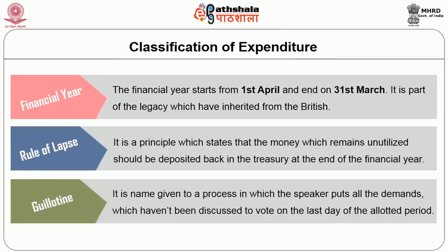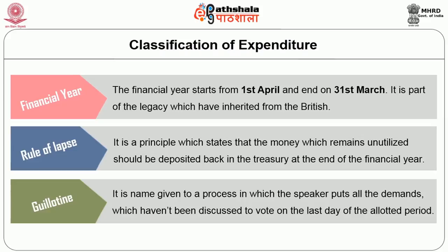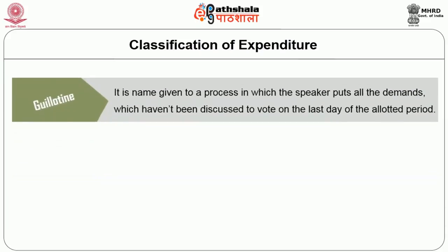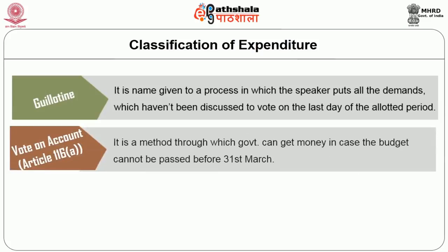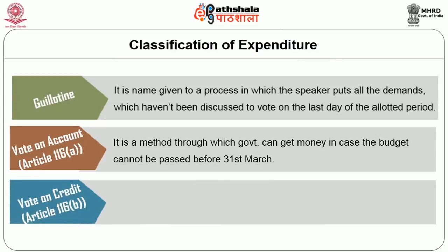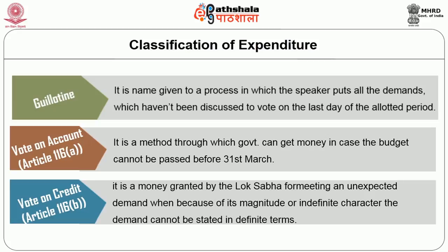Guillotine: It is a name given to a process in which the Speaker puts all the demands which have not been discussed to vote on the last day of the allotted period. Vote on Account and Vote on Credit: Vote on Account is a method through which the government can get money in case the budget cannot be passed before 31st March. Vote on Credit under Article 116 is money granted by the Lok Sabha for meeting an unexpected demand when, because of its magnitude or indefinite character, the demand cannot be stated in definite terms.